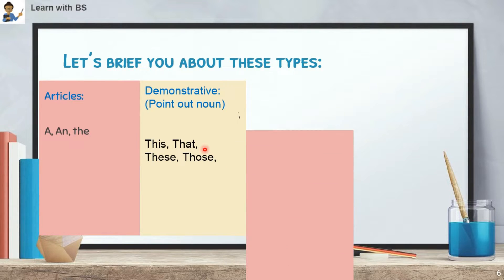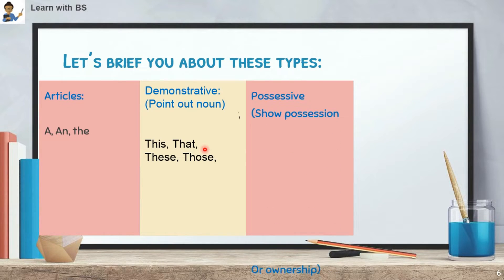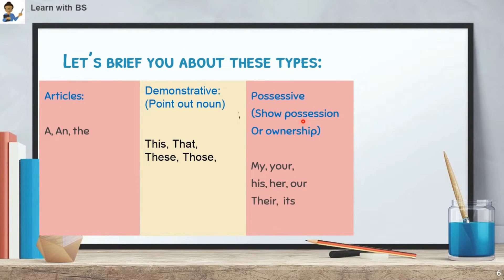Then we have Possessive determiners. Possessive determiners show possession and ownership — if you have something, you possess it, you are the owner. Examples are: 'your book', 'his book', 'her pen'. Words like my, your, his, her show ownership, so those are possessive determiners.